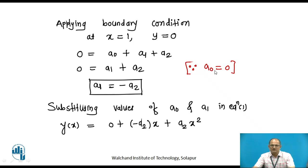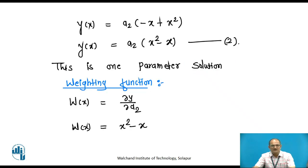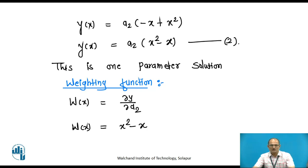Putting the values of a0 and a1 into equation 1: y(x) = 0 + (−a2)·x + a2·x². Taking a2 common, we get y(x) = a2·(x² − x), which is equation 2. This is the approximate solution and is called a one-parameter solution because it contains only one unknown, a2.